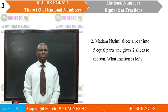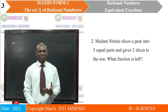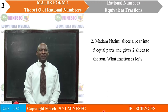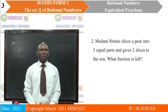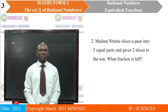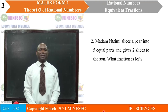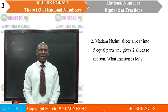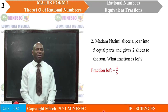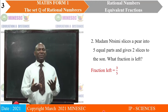Question number two: Madame Tsimi slices a pear into five equal parts and gives two slices to her son. What fraction is left? One pear sliced equally into five slices; she gives two slices to the son. It therefore means that three slices of the five equal slices are remaining, so these three slices make up three-fifths of the pear. So three-fifths of the pear is left.